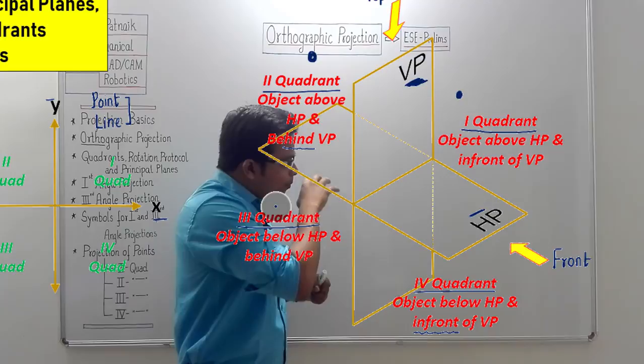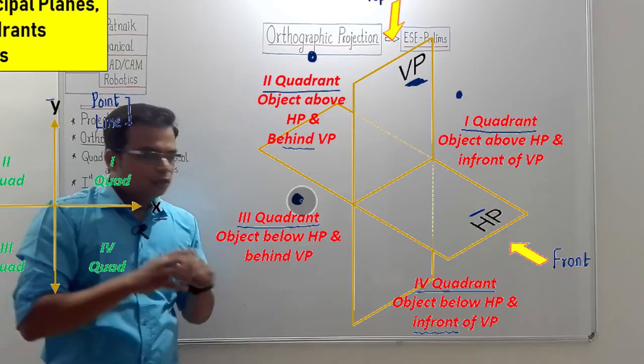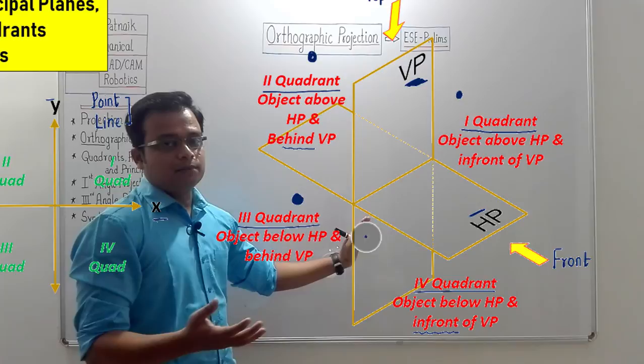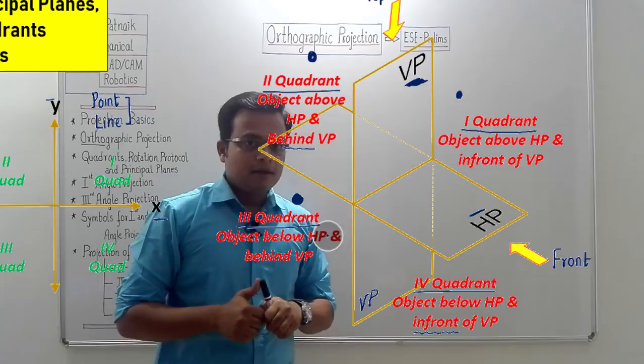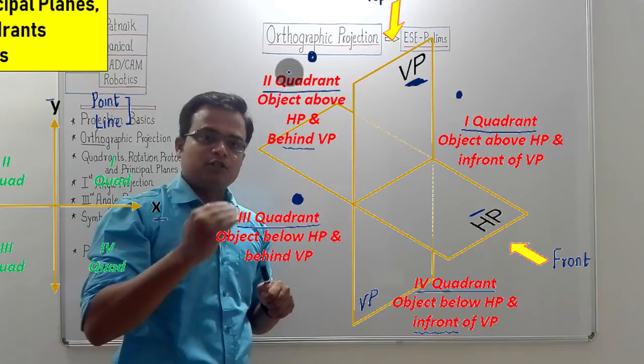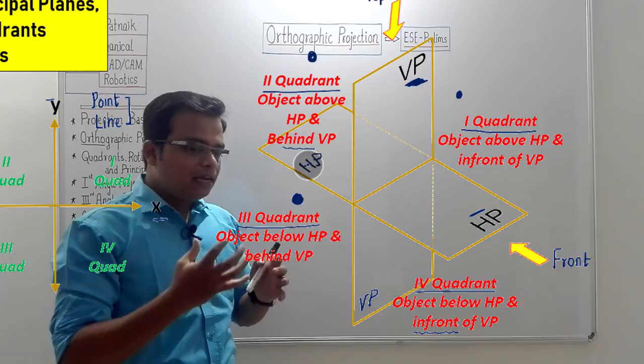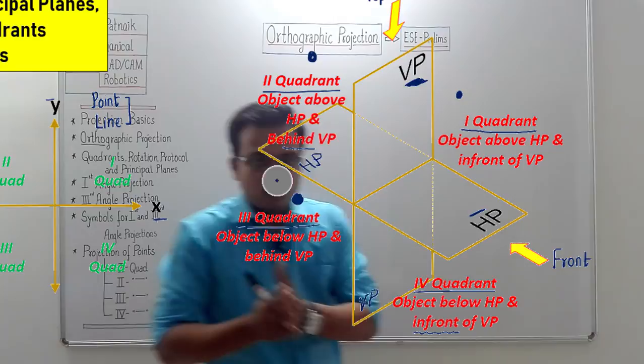For an object in the third quadrant, when you view from the front, the VP comes between you and the object — so the vertical plane must be made transparent. Similarly, when viewing from the top, the horizontal plane comes between you and the object, so HP also has to be made transparent. This is how you analyze an object's position in different quadrants.